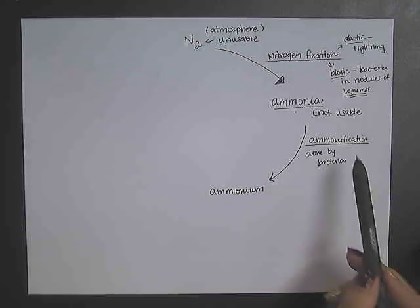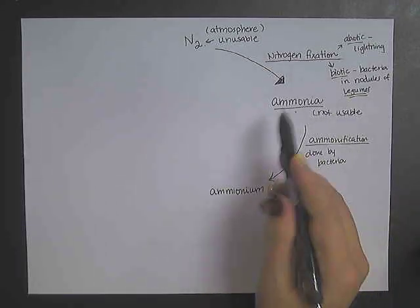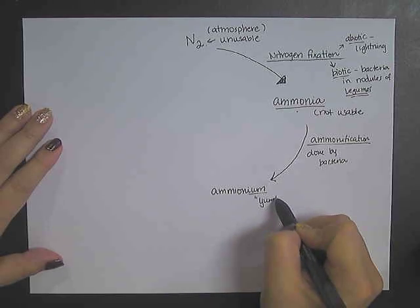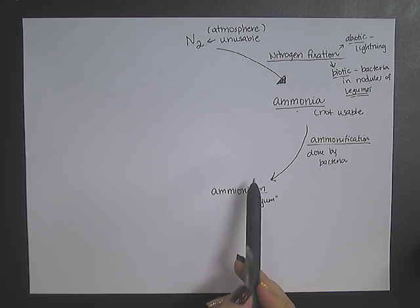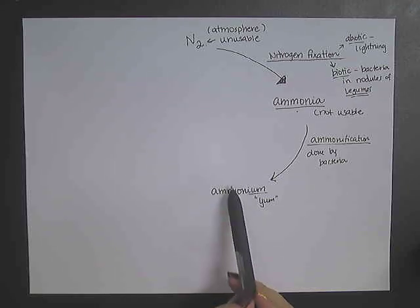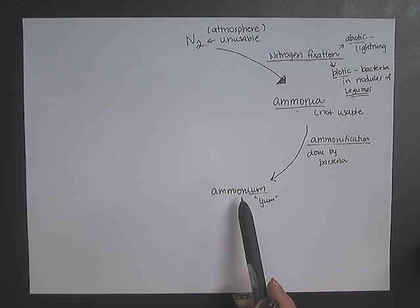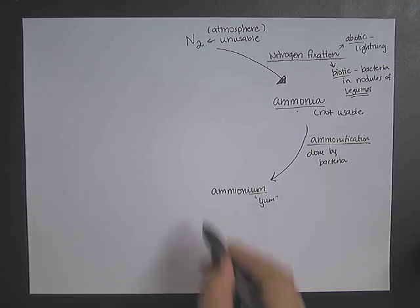And now we're starting to get something usable by plants. The way that I tell students to help them remember is think of ammonium, it sounds like yum. Although plants would prefer not to use this form of nitrogen, it is still usable. But there are more desirable forms of nitrogen that we can use.